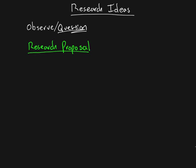Generally, how a research proposal works is: first you have some topic you're interested in — a general topic of interest. This can be anything you are curious about; you are free to pick this part. Then you take that general topic and go out and do a search of the literature — you look up past research. A good part of this chapter is about how to search through the literature, how to look through studies already done and find things relevant to what you're interested in.